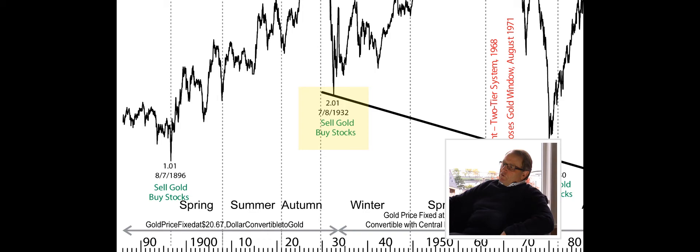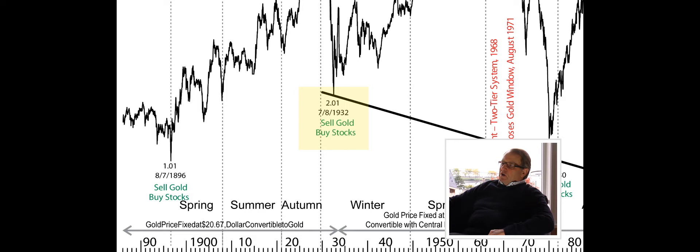However, we only came down to a 2-to-1 relationship. In fact, because gold price was fixed, $20.67 an ounce to buy the Dow, and the Dow bottomed here in July 1932 at 41 points. So it was a 2-to-1 relationship here.